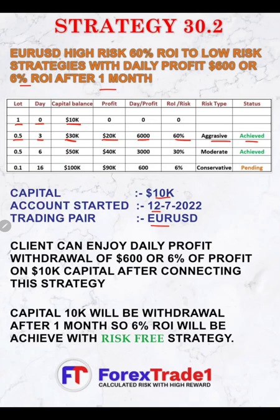We started with a 0.5 lot size from Day 4 and made another $20,000 profit in six days. The daily profit is $3,000 — three thousand multiplied by six is roughly $18,000 — so the capital balance reached $50,000. The risk-reward ratio is 30%, and the risk type moved from aggressive to moderate. That target is already achieved; the current capital balance is approximately $53,000–$54,000, which we'll verify in the trading account history.